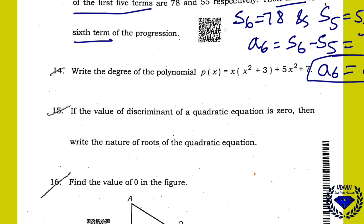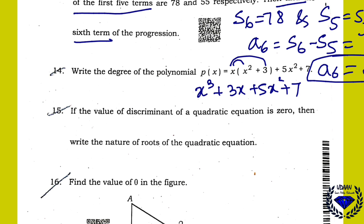Next question: After multiplying the polynomial, it forms x³ + 5x² + 3x + 7. The highest degree after simplification is 3, so the degree of the polynomial is 3.